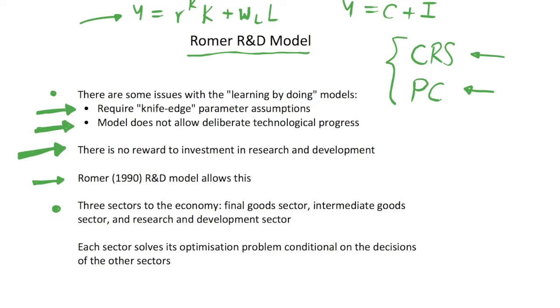We have a final goods sector where final goods are sold to consumers. We have an intermediate goods sector, which is firms buying patents and monopoly rights to use the ideas developed by scientists in our research and development sector or R&D sector.